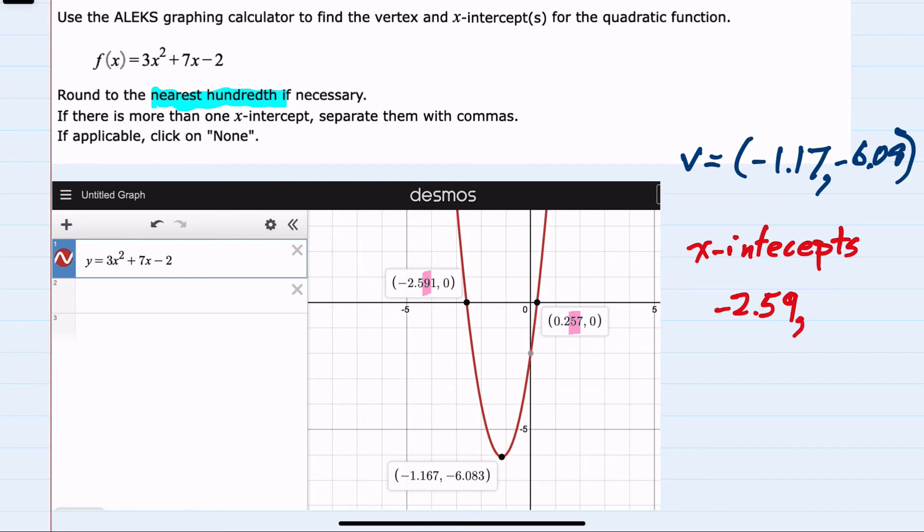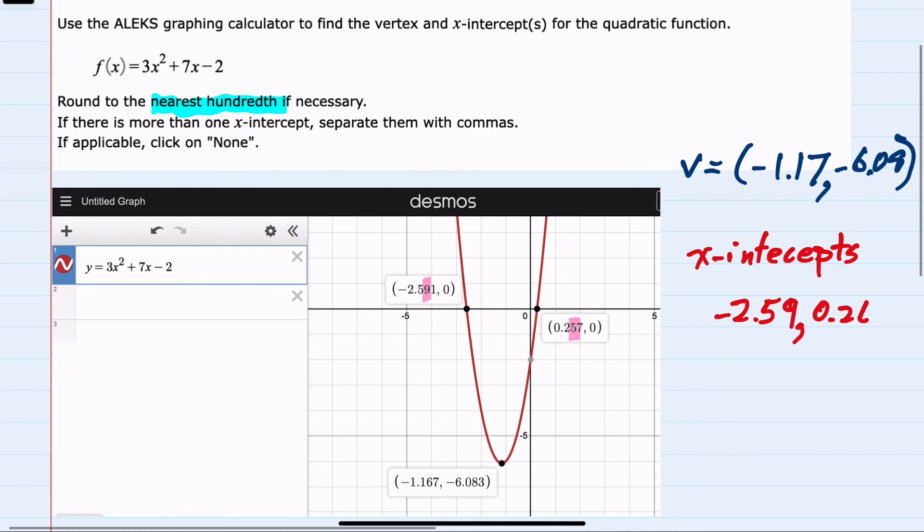And the second x-intercept would be 0.26. Here the 5 is followed by a 7, so it would round up to a 6. These are our two x-intercepts, and finding these was pretty straightforward using a graphing calculator and then clicking on the relevant points.